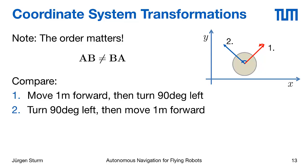It is important to execute these transformations in the right order, because AB is not the same as BA. For example, moving one meter forward and then turning 90 degrees to the left is clearly not the same as first turning 90 degrees and then moving one meter forward, as illustrated by the red arrow. Order matters when concatenating transformations.